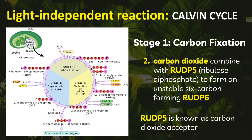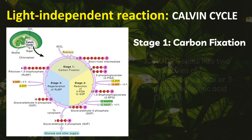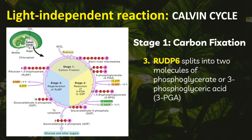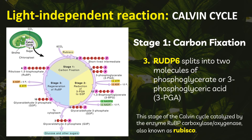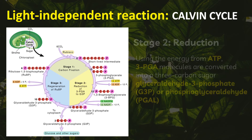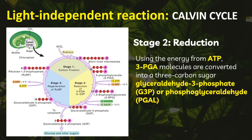RuDP6 splits into two molecules of 3-phosphoglycerate, also called 3-phosphoglyceric acid or 3-PGA. RuDP5 is also known as the carbon dioxide acceptor. This stage of the Calvin Cycle is catalyzed by the enzyme RuBisCO.